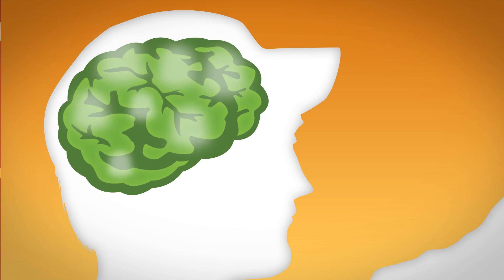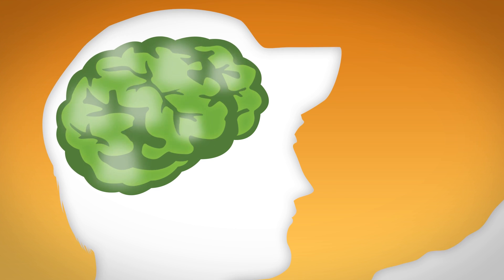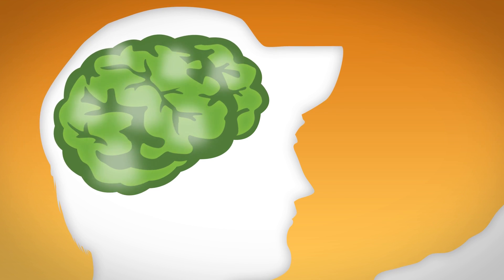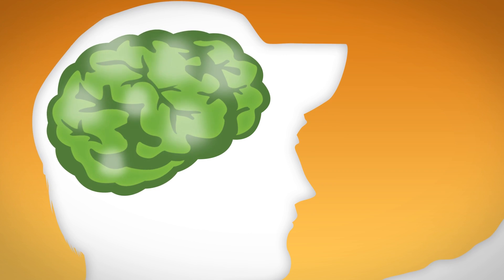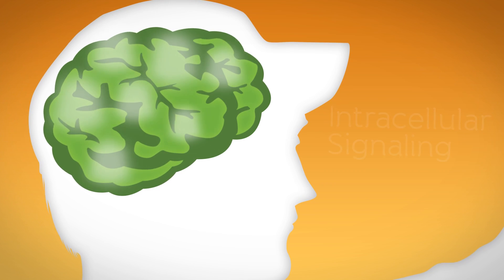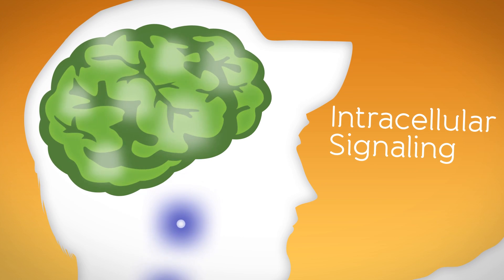In order to elude your pursuer, you will have to react quickly at both the synaptic and cellular level. To accomplish this, a number of signaling molecules are released to various targets throughout the body. When faced with this type of stressor,